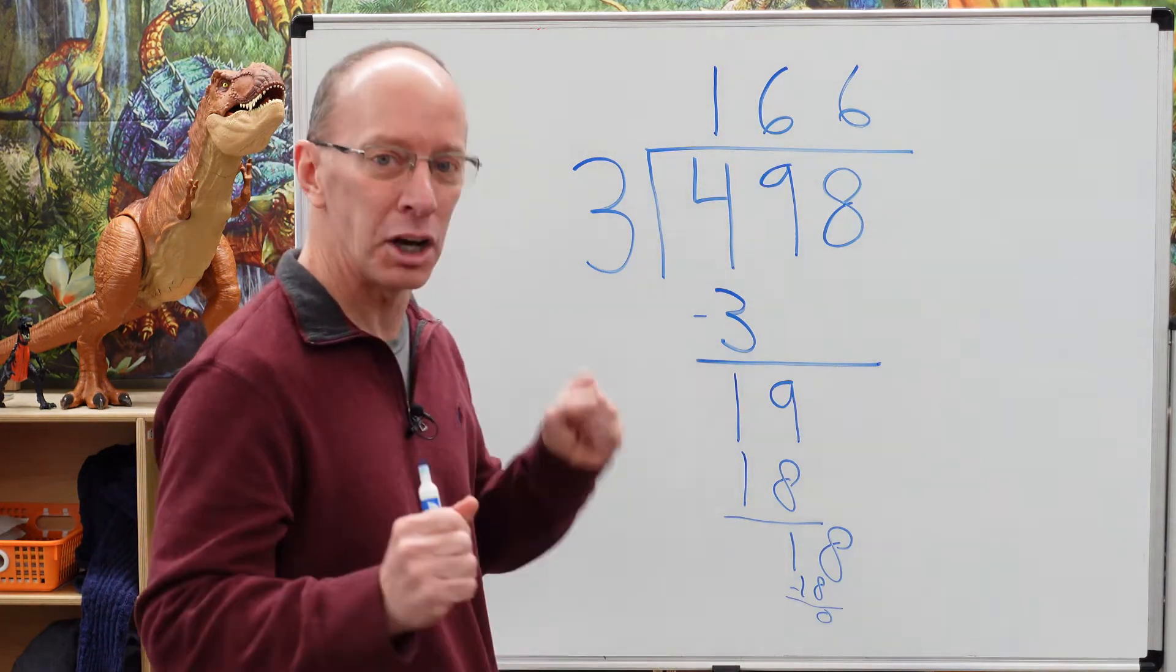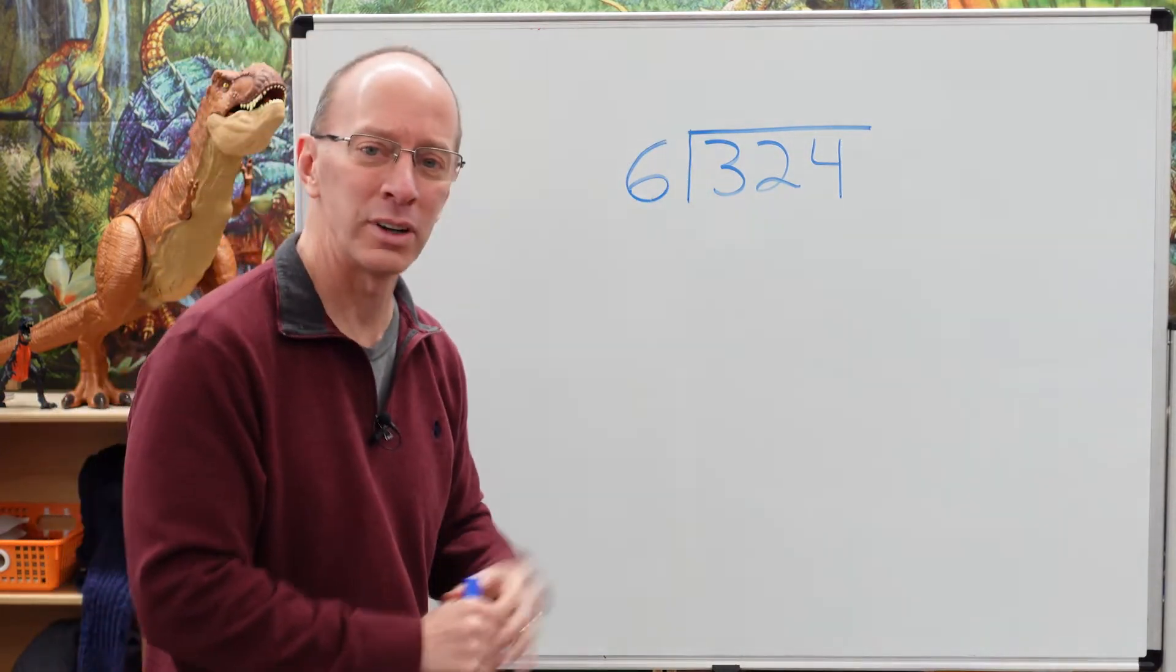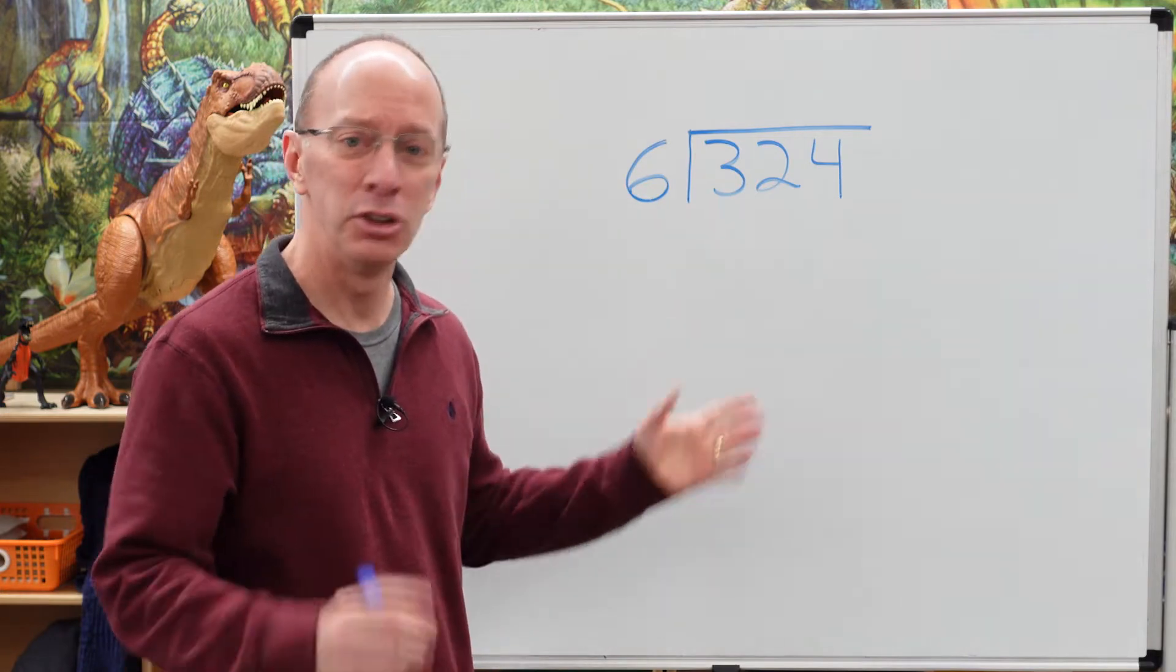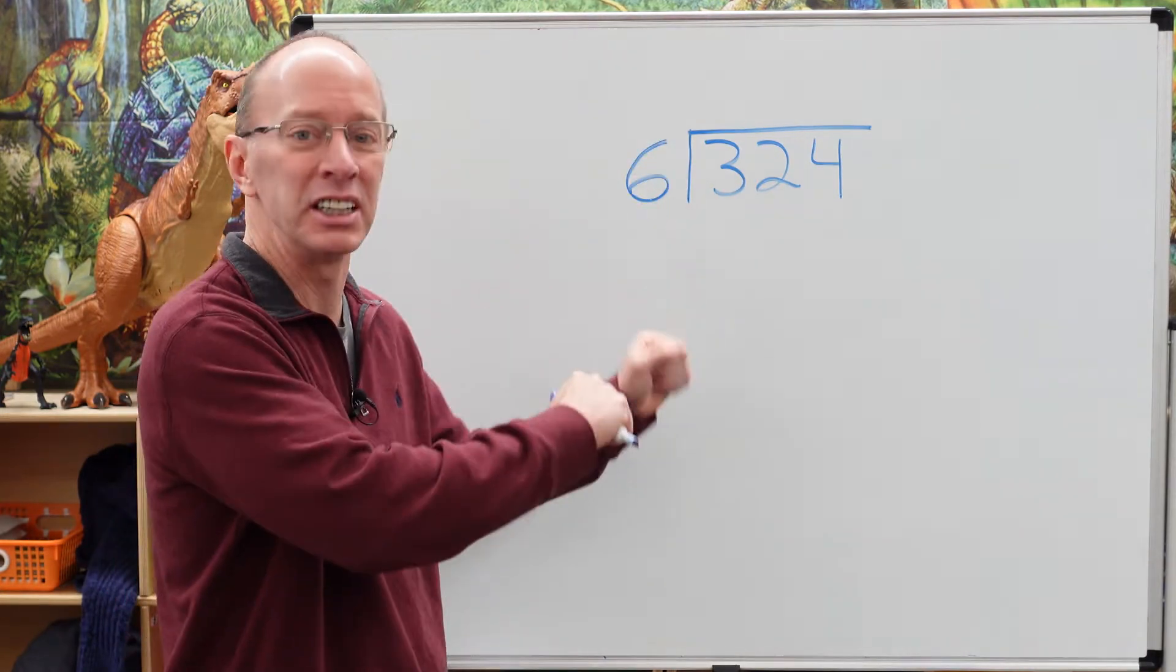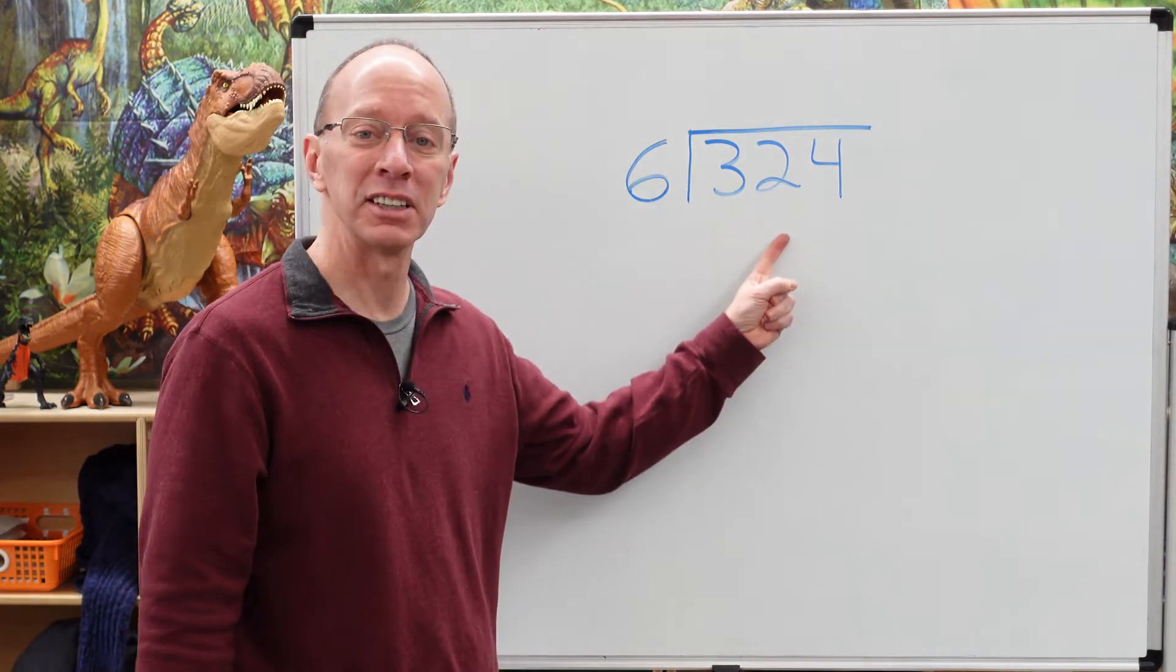Ready to try another one? Yeah, let's do it. All right, let's take a look at this. We have 324 divided by six. Can I put six into three? No, you can't. You could try to push it in there and squeeze it in, but it's not going to work. So we have to go over to the next number.